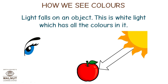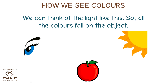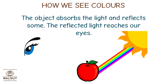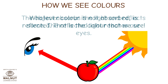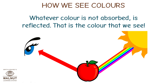How we see colors. Light falls on an object — this is white light, which has all the colors in it. All the colors fall on the object. The object absorbs the light and reflects some. The reflected light reaches our eyes. Whatever color is not absorbed is reflected, and that is the color that we see.